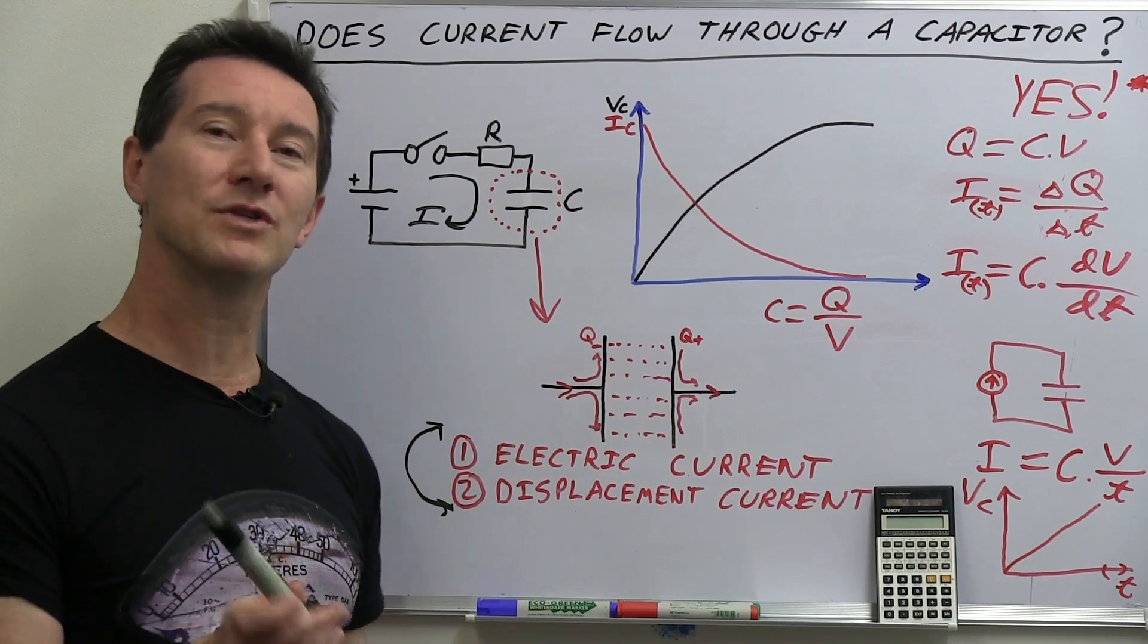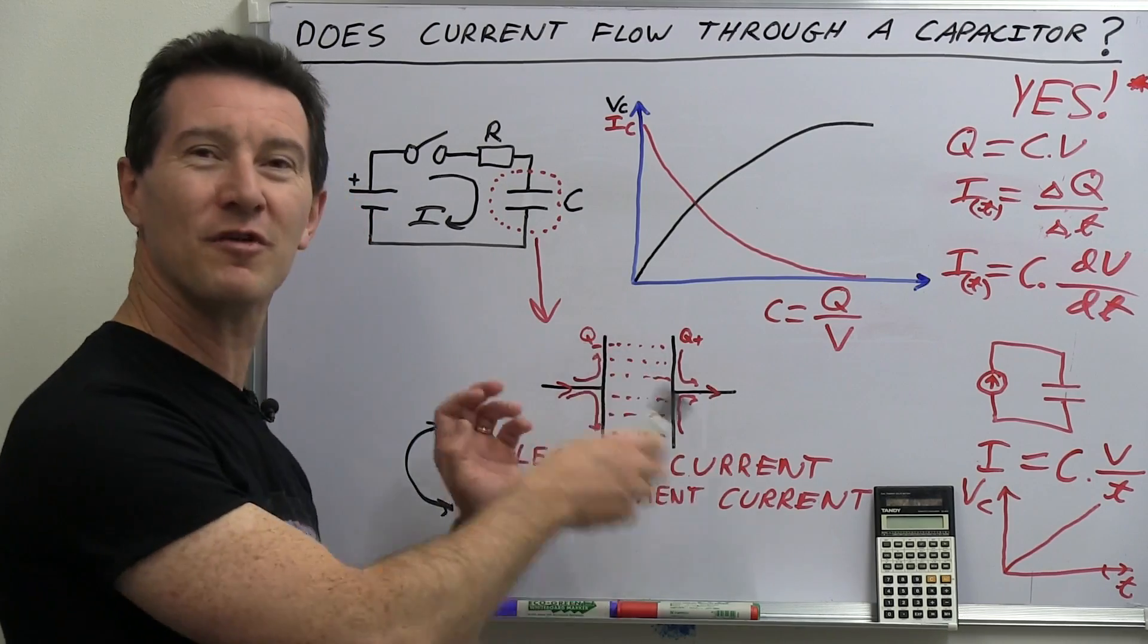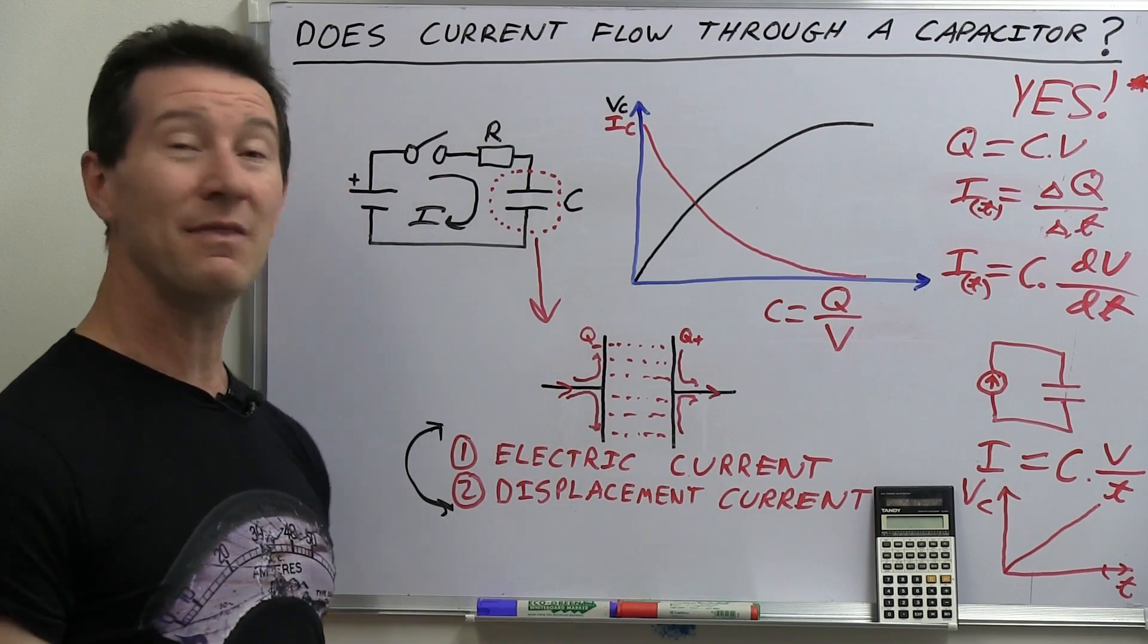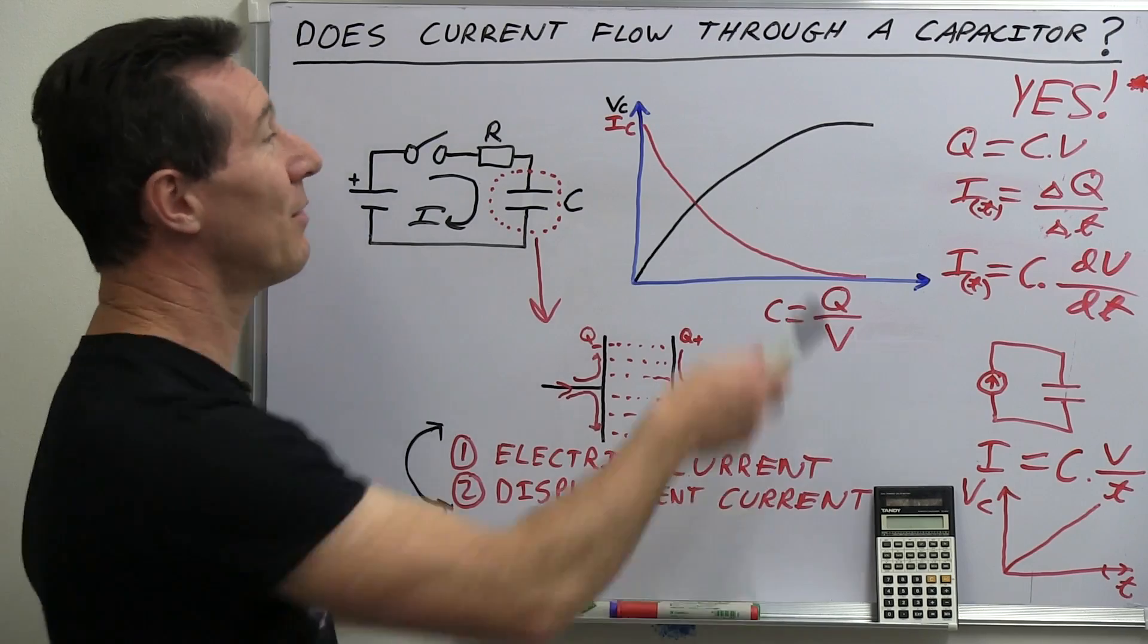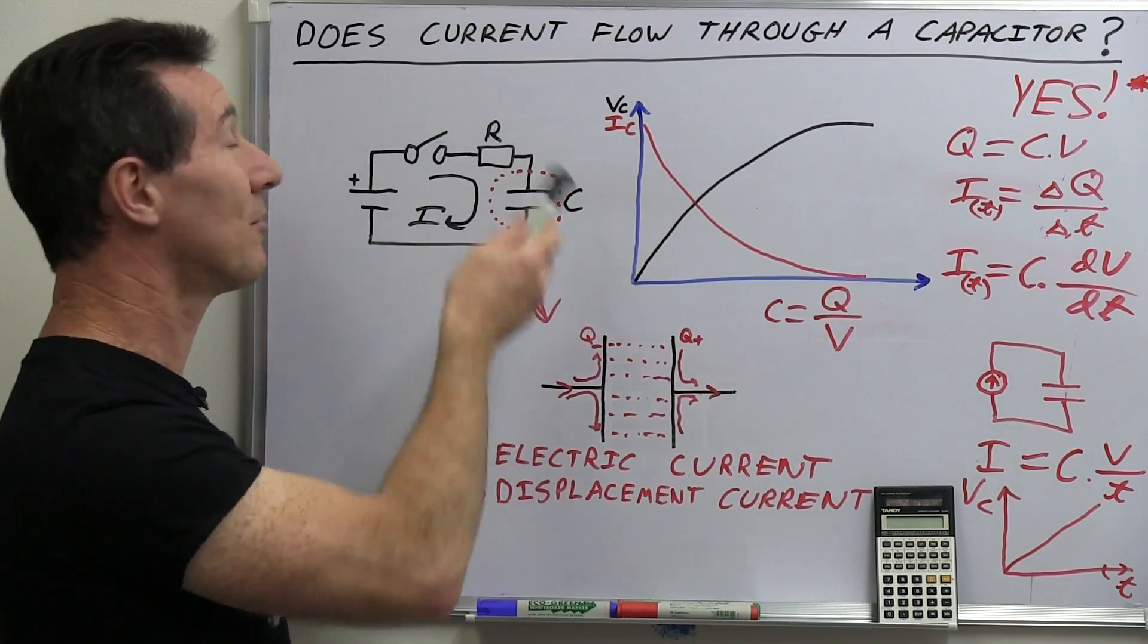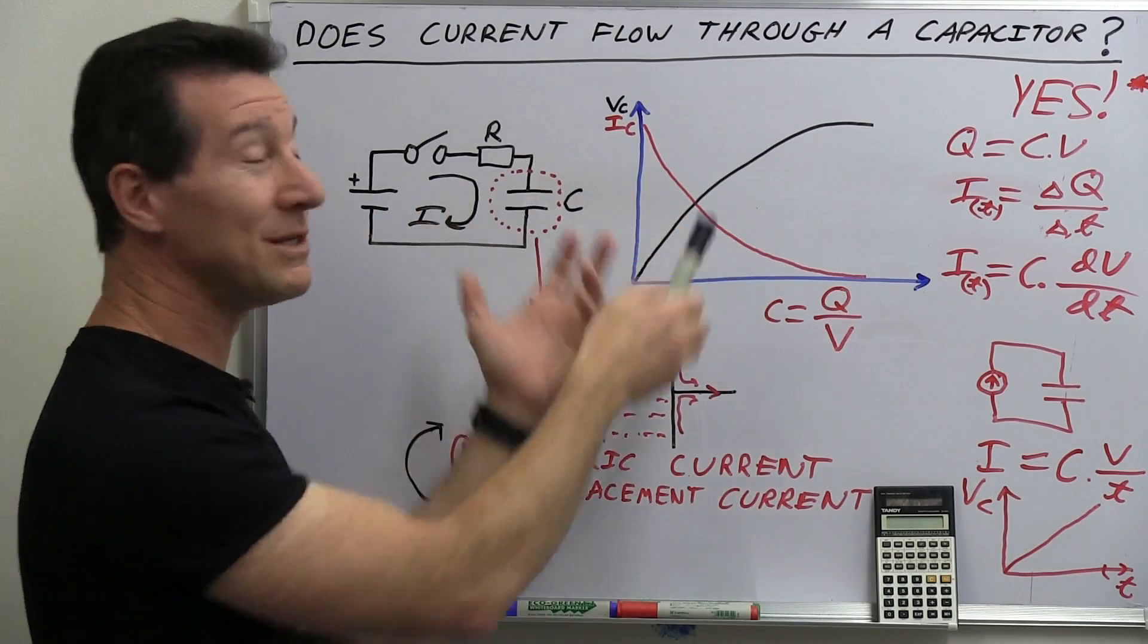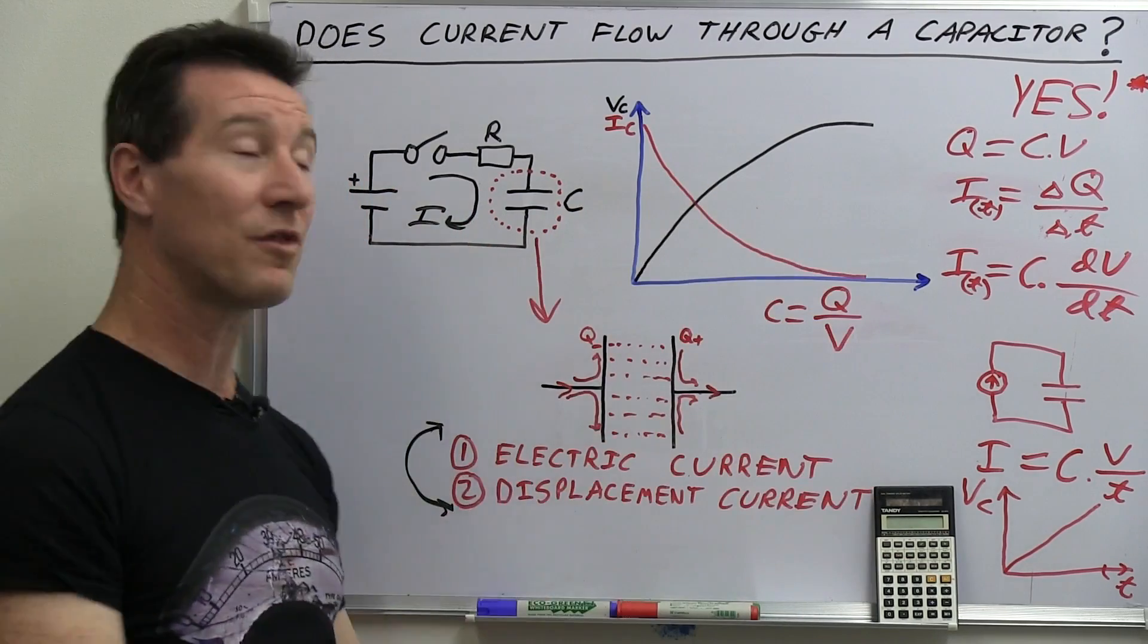So really, there's two different worlds going on here. There's the fundamental physics world of electron flow and charge carriers and all that sort of jazz. And there's the high level macro practical electronics thing where we use all our basic equations and current flows through the capacitor and all the equations work and everything's just fine. And that's how we teach electronics. That's how we understand it. That's how we design things with it.